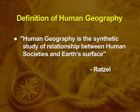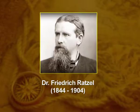Given definitions by the world's renowned geographers, let us look at their perspectives. Ratzel defined human geography as the synthetic study of the relationship between human societies and Earth's surface. In this definition, the two components — human societies and Earth's surface — have been brought together to clearly explain their interdependencies.